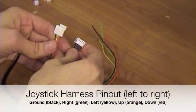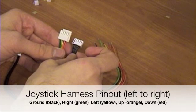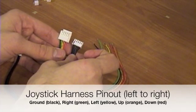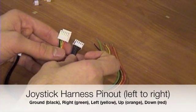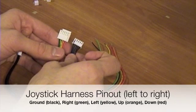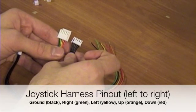So going from left to right, we have ground, and then right, which is the green on the JLF harness, left, which is yellow, up, which is orange, and down, which is red.